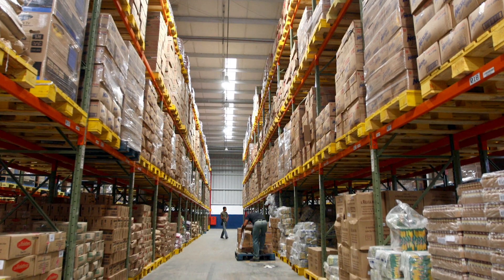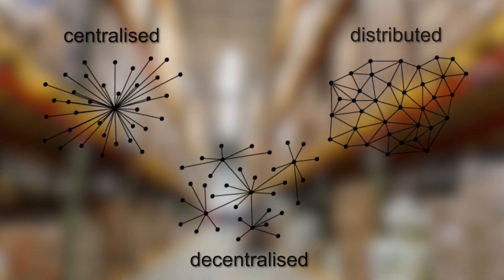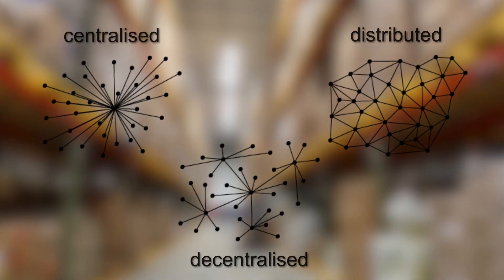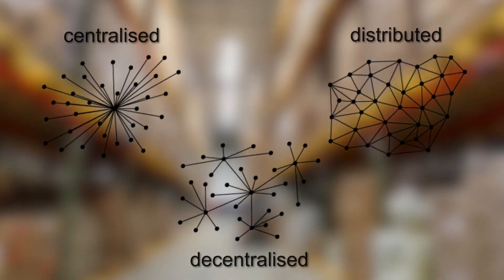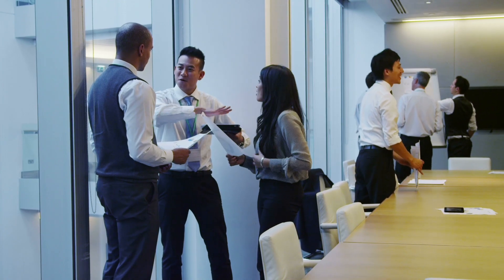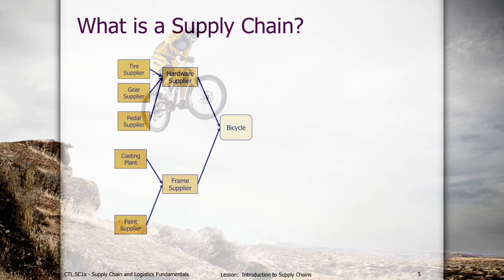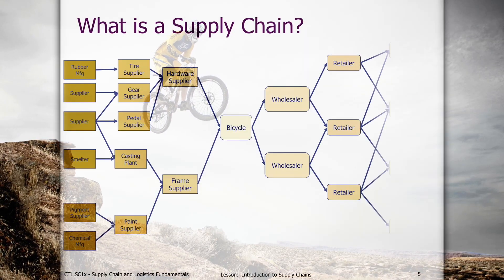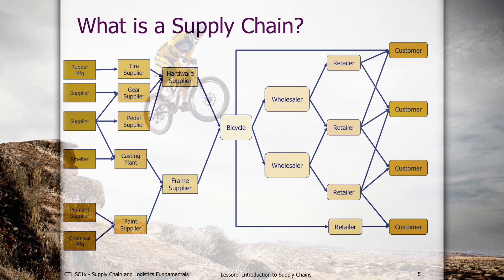Finally, we'll wrap the course up by discussing how to design or redesign supply chain processes, performance metric systems, and the supply chain organization itself. You'll learn how all these decisions interact with each other and influence the ultimate success of a supply chain.